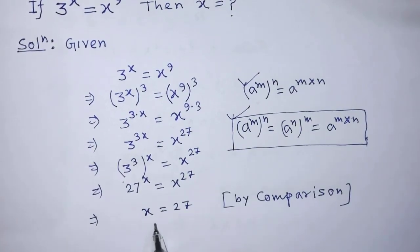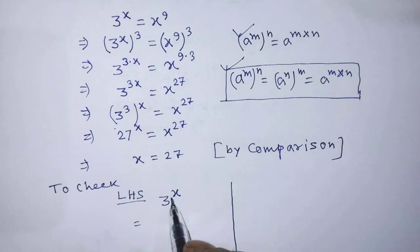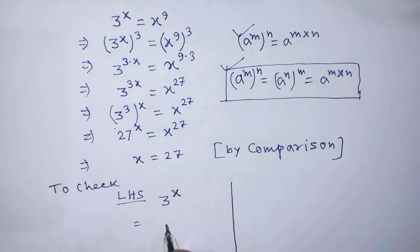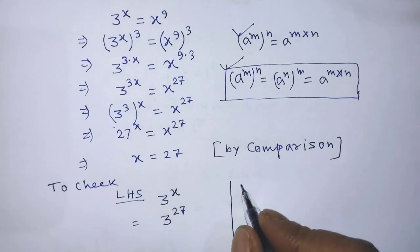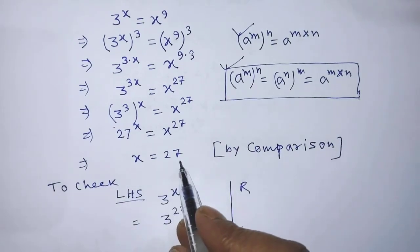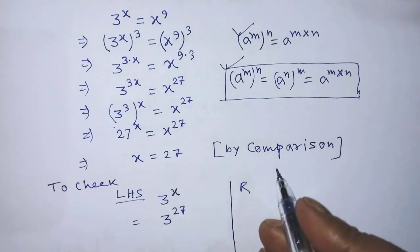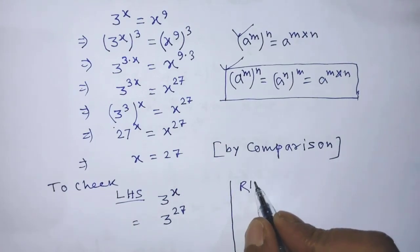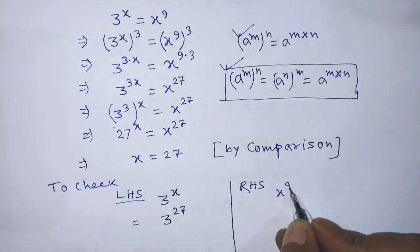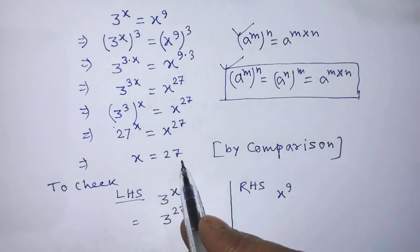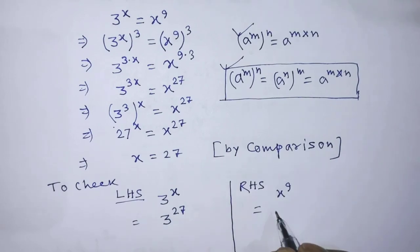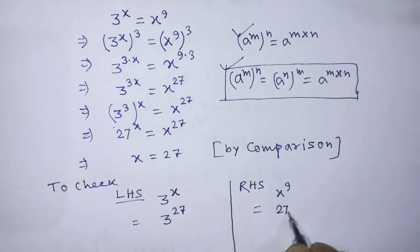So the value of x will be 27. We can put the value of x equal to 27 in the left hand side of this algebraic expression, and it becomes 3 to the power 27. Similarly, we can put x equal to 27 on the right hand side, where the expression is x to the power 9, and we get 27 whole to the power 9.